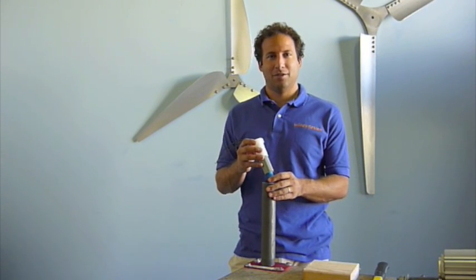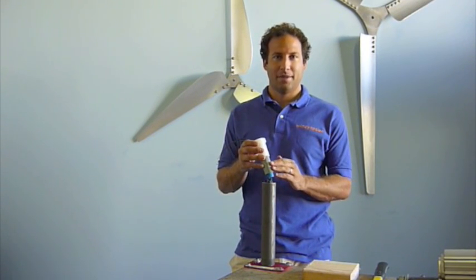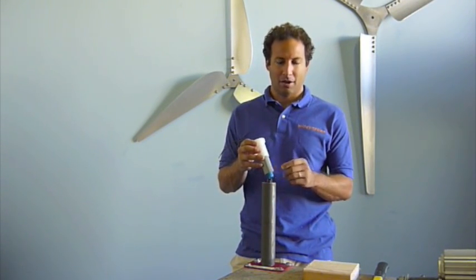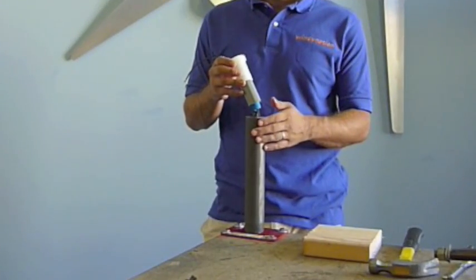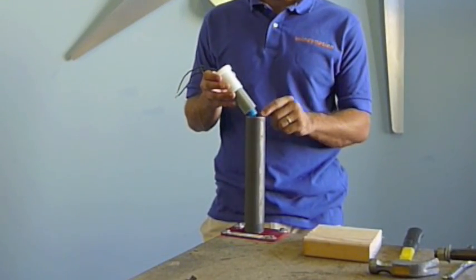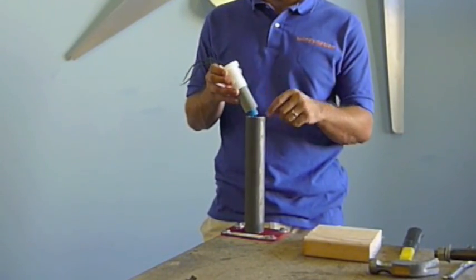Alright, so the next thing we need to do is install the slip ring and the yaw bushing onto your tower pipe. To do that, we just have the slip ring and yaw bushing.